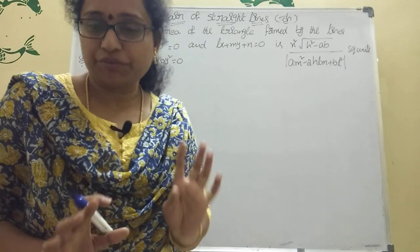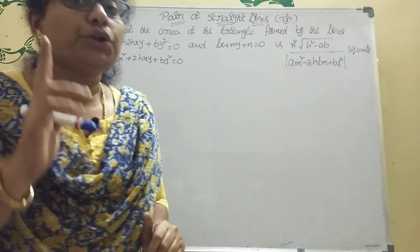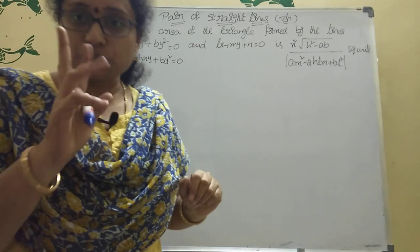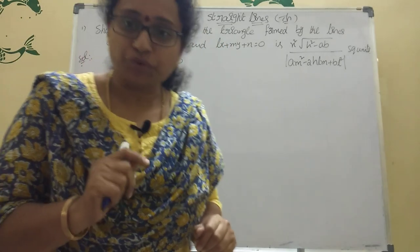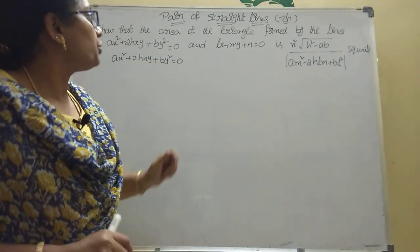It is very important — five theorems and five sums. In this chapter, two sums come. The weight is two sevens, that is fourteen marks. Now come to the point.